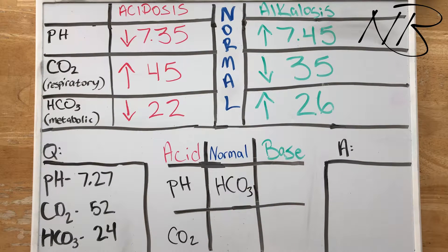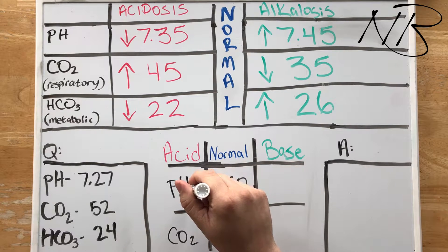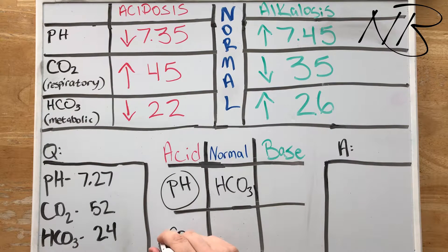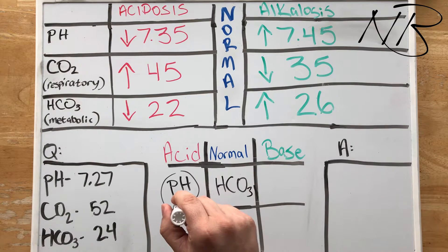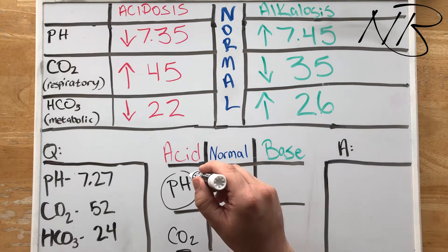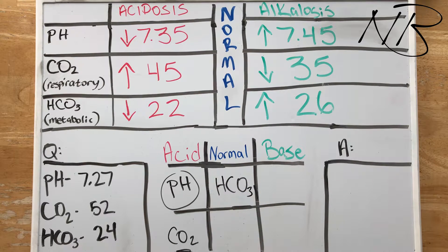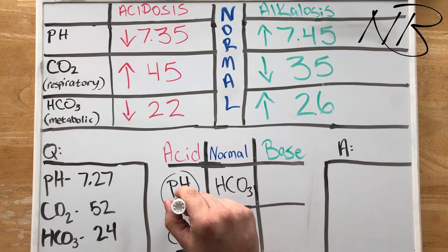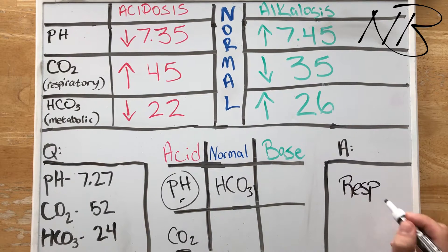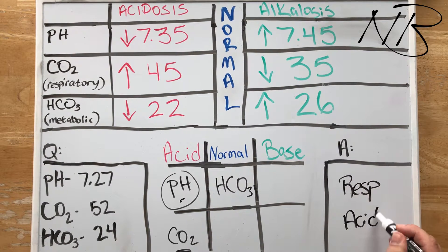The way in which we utilize the tic-tac-toe method is whenever you have a value that falls in the same column as your pH, you know that that value is the cause of your pH, whether your pH is acidotic or if it's alkalotic or basic. So in this case our blood pH and our CO2 fall in the same category, therefore CO2 is the cause of our acidosis. So what is our answer? Our answer is respiratory acidosis.